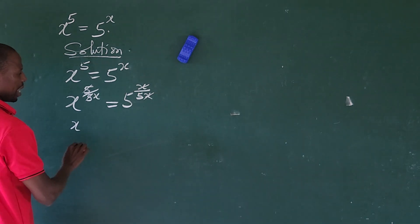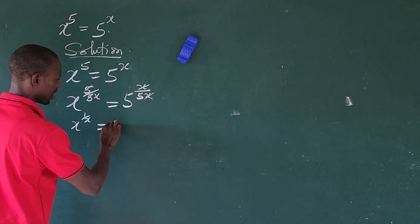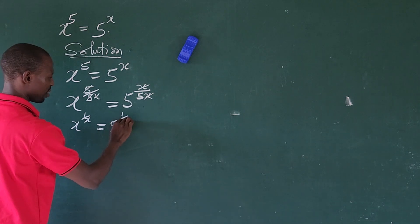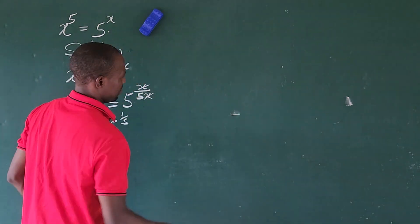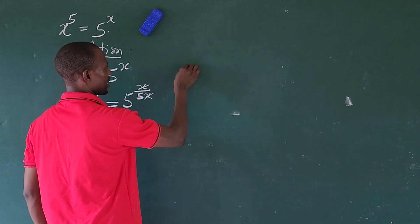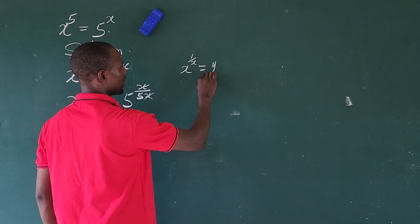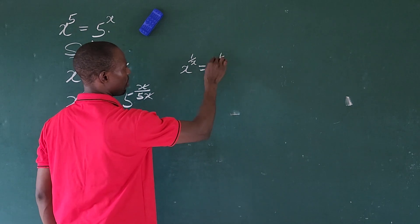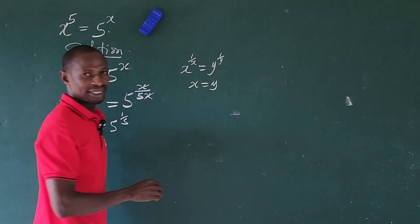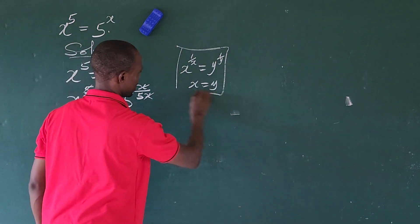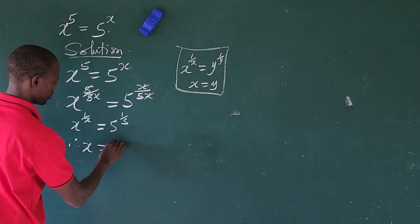We are now left with x to the power of 1 all over x, equal to 5 to the power of 1 all over 5. Remember: if we have x to the power of 1 over x equal to y to the power of 1 over y, this means x is equal to y. So therefore our x is equal to 5. Very easy!